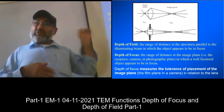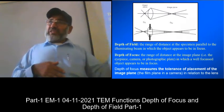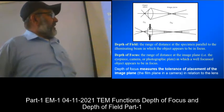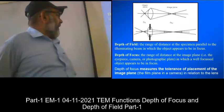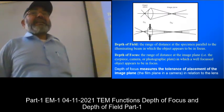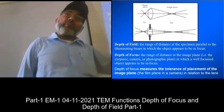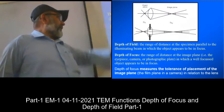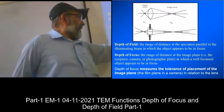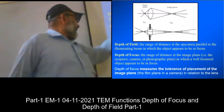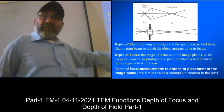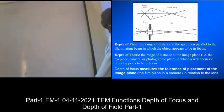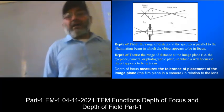Depth of field is associated with the object. Depth of focus is associated with the image. The depth of focus bears the tolerance of placement of the image plane. It can tolerate that much movement without compromising the focus. Similarly, the depth of field measures the tolerance of placement of the object within that range. These are the ranges.